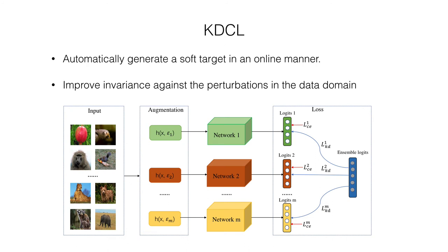KDCL automatically generates an ensemble soft target in an online manner. A series of methods are proposed to generate a soft target, which ensures that students with different capacities benefit from collaborative learning. The raw images are augmented separately with different random seeds, and the soft target is generated to supervise all networks. This enhances the invariance of the network against input perturbations. All trained models can predict independently, so the improvement does not incur additional test computational cost.